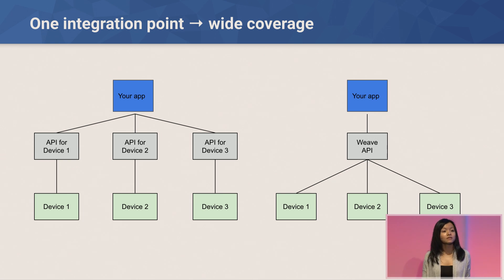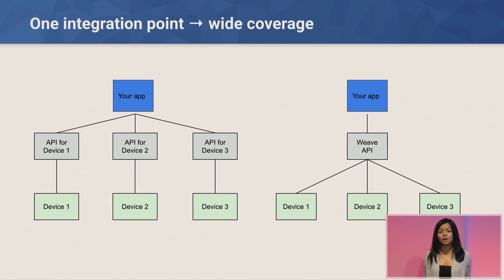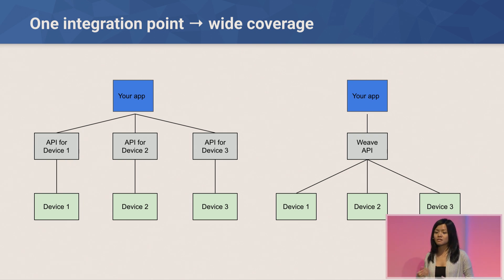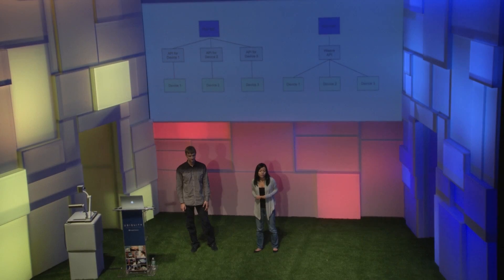Weave enables this by working very closely with device developers to develop public schemas for functionality that devices of a particular class share. For example, every single light bulb you have at home supports the capability to turn on and off. There should be no reason why sending a command to this kind of device is different depending on the OEM. Optional functionality like setting brightness should also be standardized. This does not preclude developers from adding unique functionality to their devices. You can learn more about our device schemas on the Weave developer website.